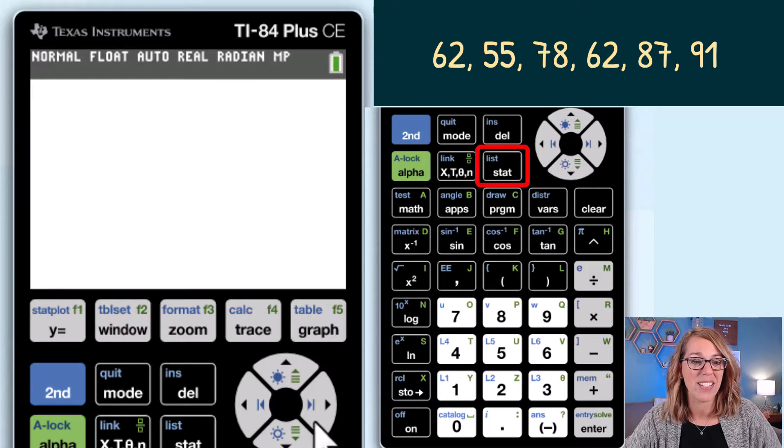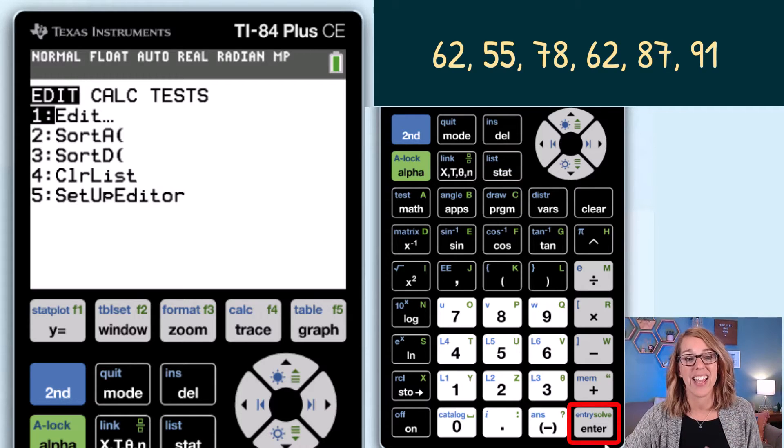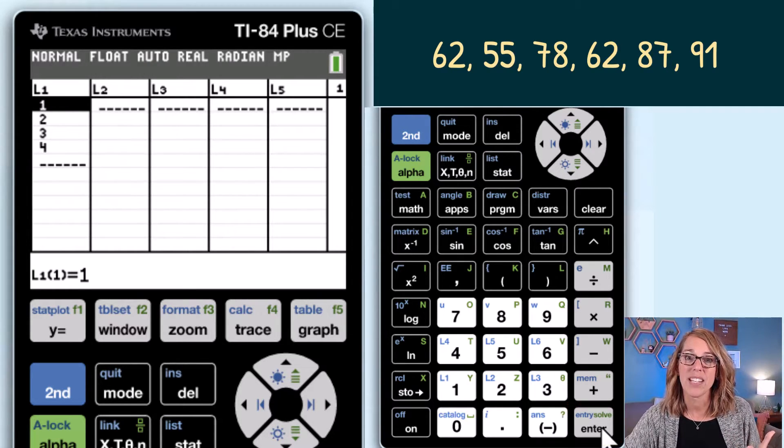To do that I'm going to go to my stat menu. So I click on stat and then I'm going to choose edit by clicking enter. So I click enter and now I've got some lists.